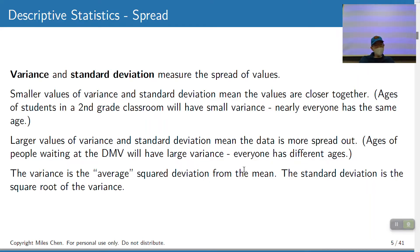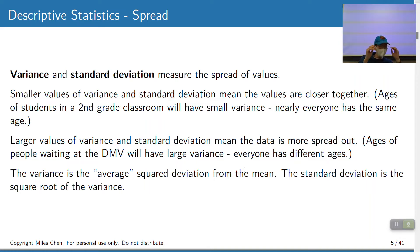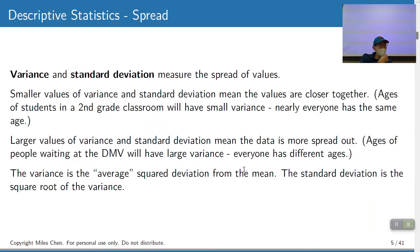The variance and standard deviation measure the spread of the values — how spread out or how similar the values are. This really only applies to numeric variables. Small values of variance and standard deviation mean the values are all close together. The example I like to use is imagine a second-grade classroom in elementary school.